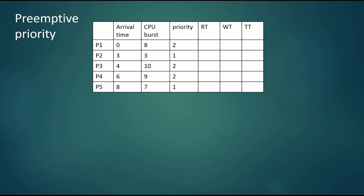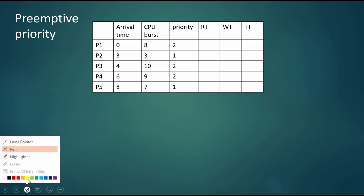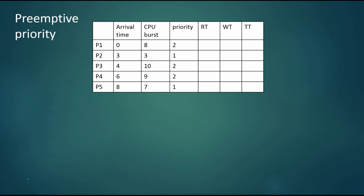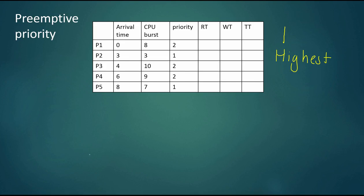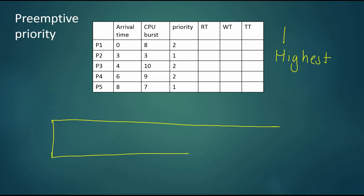Now we're going to do preemptive priority. In this case, the highest priority is one, so priority one is the highest. Ties are broken based on arrival time (first come first serve). If a lower priority task is on the processor and a higher priority task arrives, the running task gets preempted.